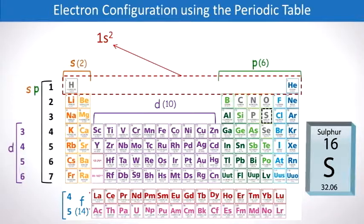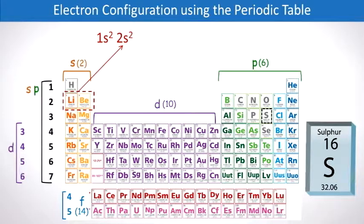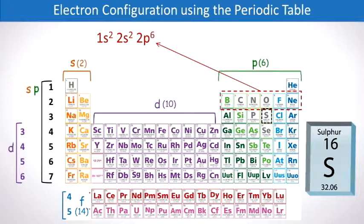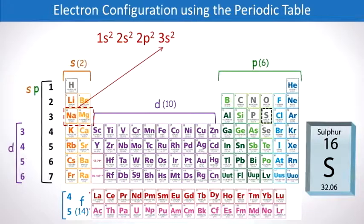Here we show you 1s2 because, again, hydrogen and helium only need s orbitals. Then we have 2s2, 2p6, 3s2.